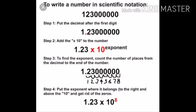Step 1: Put the decimal point after the first non-zero digit. For example, we get 1.23000000.